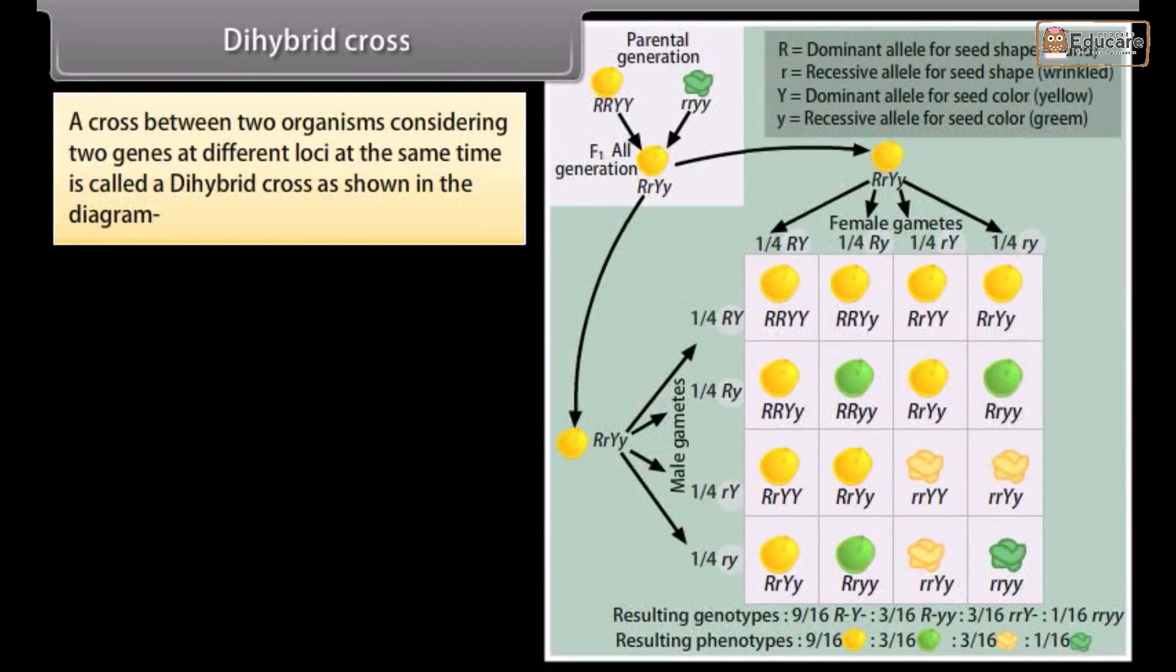Dihybrid cross. A cross between two organisms considering two genes at different loci at the same time is called a dihybrid cross as shown in the diagram.